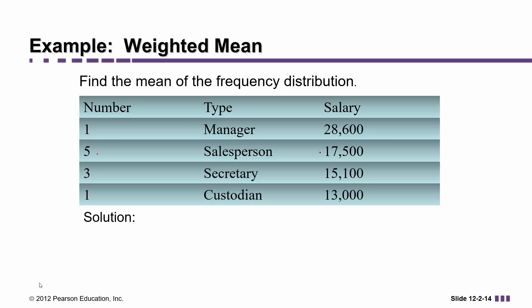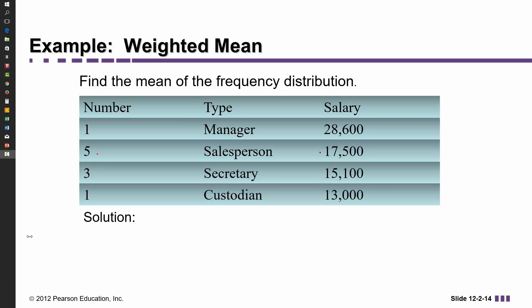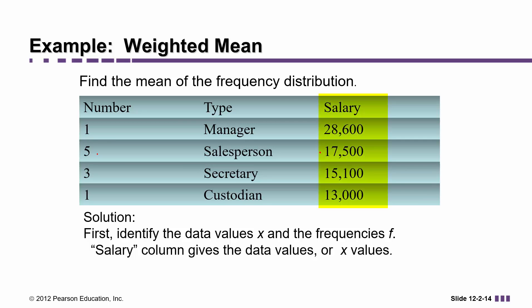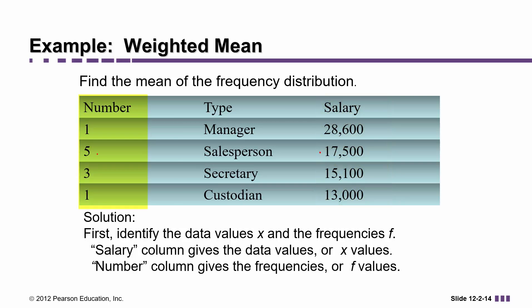The company has several employees that have different jobs. For example, they have one manager, five salespersons, three secretaries, and a custodian, and each of these people makes a different salary based on which job they do. The first step is going to be to identify what are our data values and what are our frequencies. The salary column is the actual data value, or X values, and the number column is telling us how frequently these occur — the frequencies.